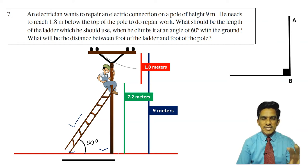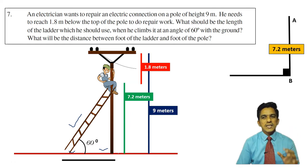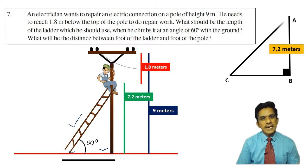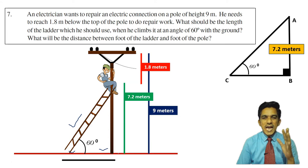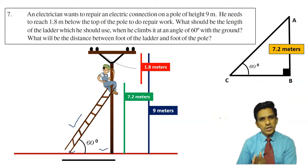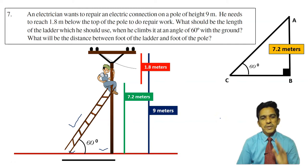Let us draw the diagram. AB is the height to which the electrician has to reach, and that height is 7.2 meters. You should not consider 9. Suppose C is the point where the foot of the ladder is present. AC is the ladder. AC is making an angle of 60 degrees with the ground. You have to calculate the length AC and the distance BC.